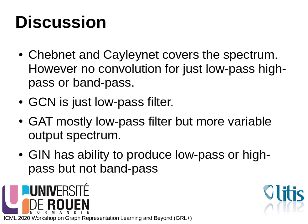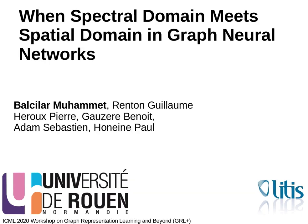Graph attention network mostly low-pass filter, but has more variation in output spectrum. Graph isomorphism network has the ability to produce low-pass or high-pass, but not band-pass. Thanks for your time.